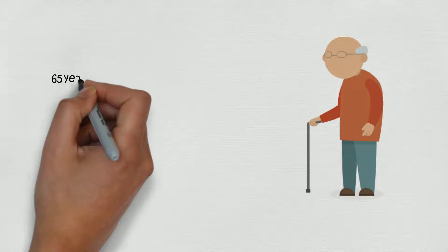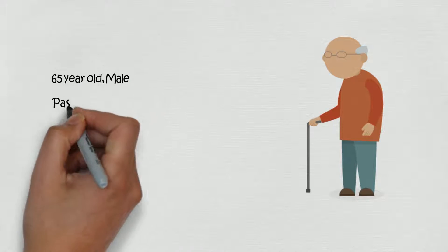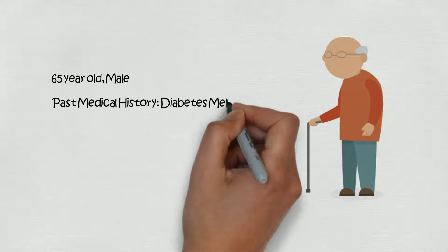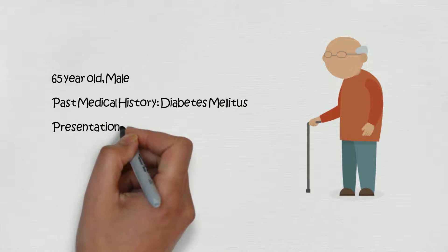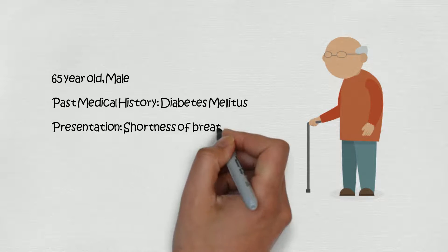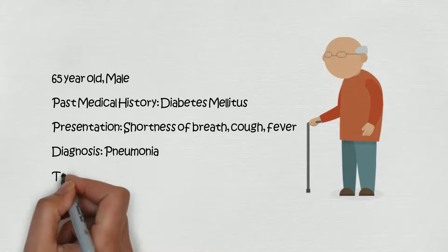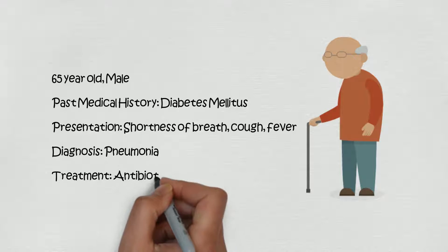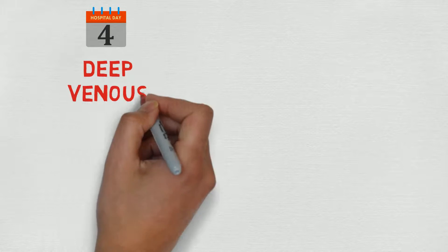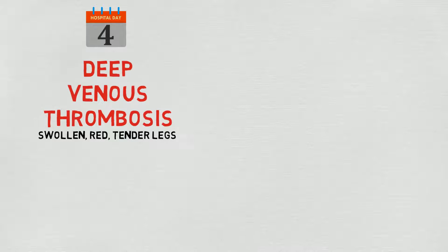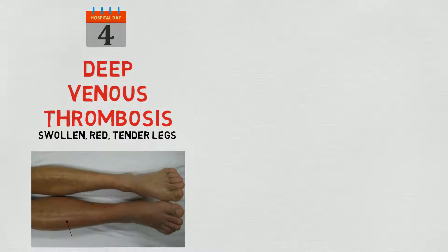So we have a 65-year-old male with a medical history of diabetes. He comes in short of breath, coughing, and has a fever. He's diagnosed with pneumonia and treated with antibiotics. Then on day four of hospitalization, he develops DVTs — his leg is swollen, red, and tender.